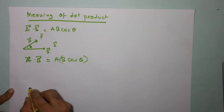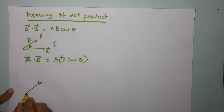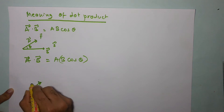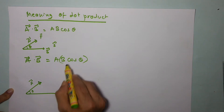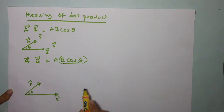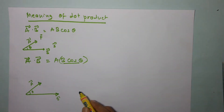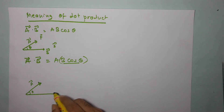Let me draw this diagram again — a slightly bigger diagram. Here, we are not too worried about exact direction and magnitude since I am not trying to scale. So let's say this is vector a and this is vector b, and this is angle theta. Now, to understand b cosθ, I will take a perpendicular of vector a onto vector b.